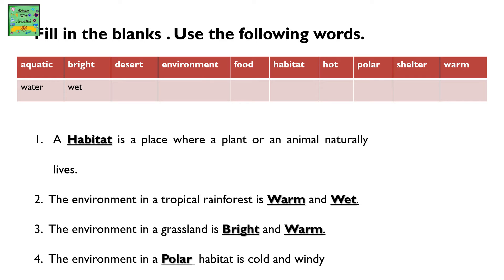Fill in the blanks. Use the following words: aquatic, bright, desert, environment, food, habitat, hot, polar, shelter, warm, water, wet. A habitat is a place where a plant or an animal naturally lives. The environment in a tropical rainforest is warm and wet. The environment in a grassland is bright and warm.